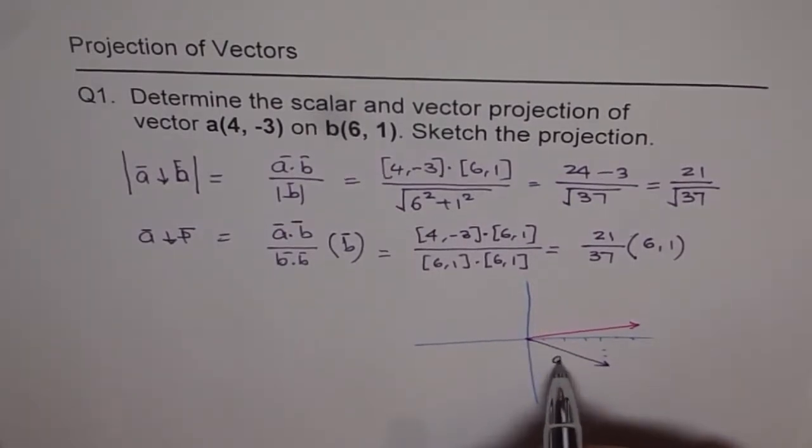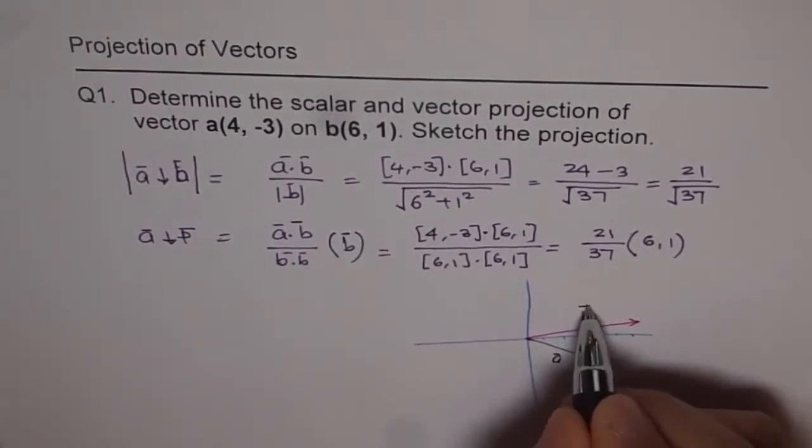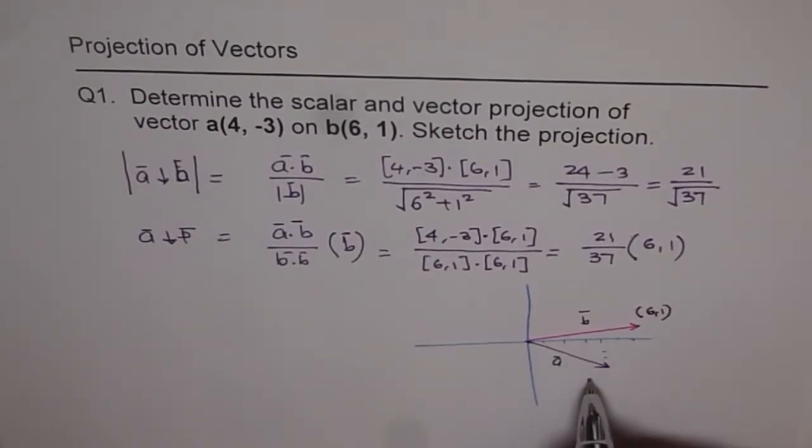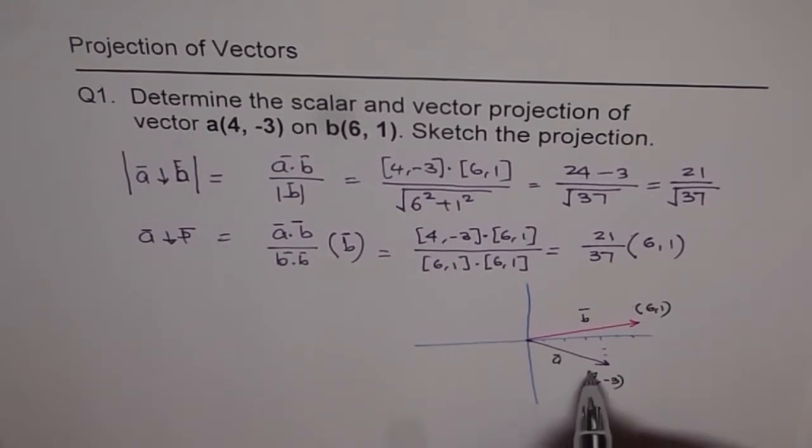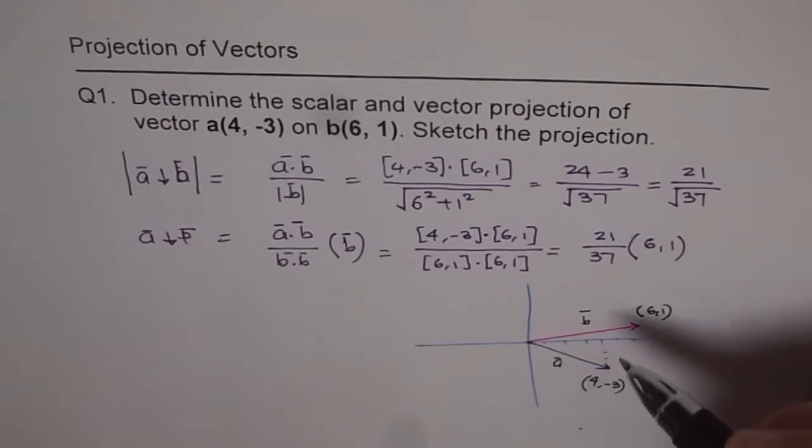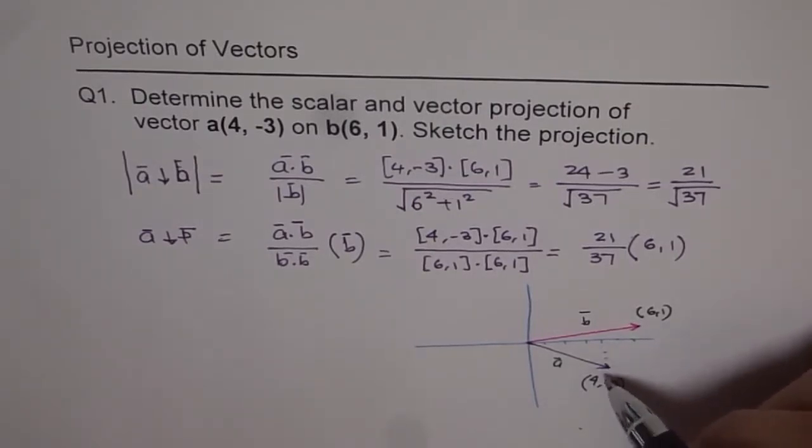So we have vector A here and vector B. And this point is (6,1) for us and this point is (4,-3), which is vector A. Now if you have to plot projection of A on B, so we are doing A on B, that means basically you have to drop a perpendicular from A to B.